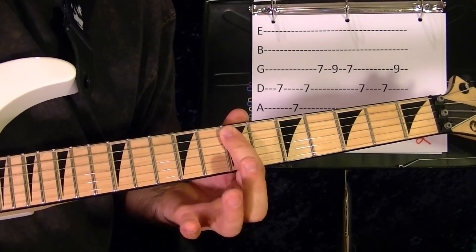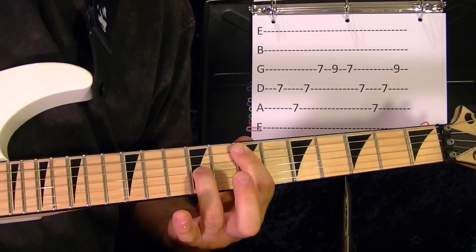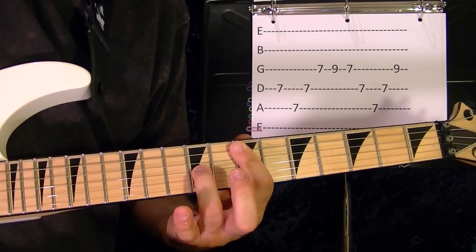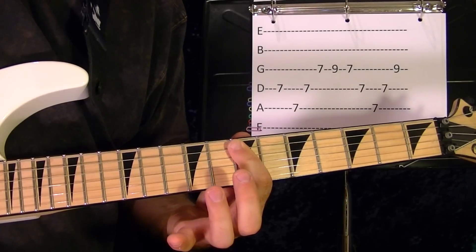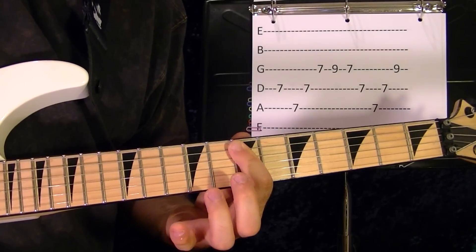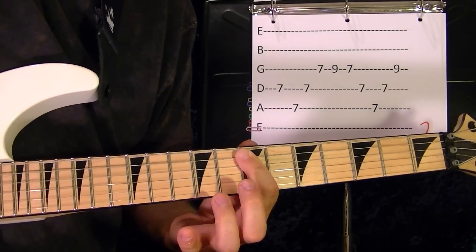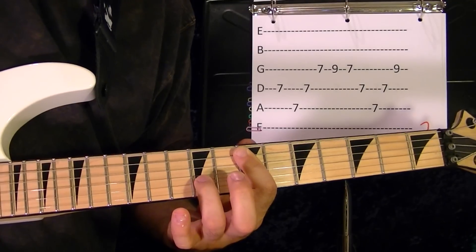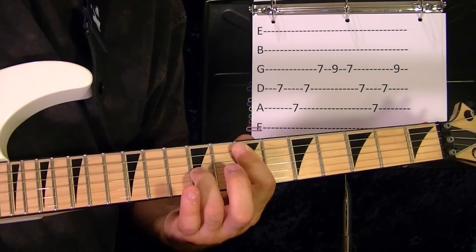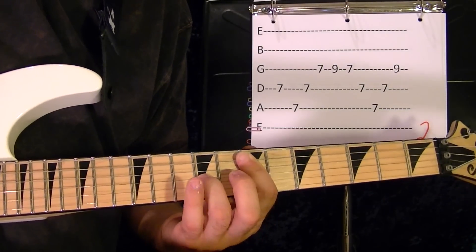Fourth string seventh, third string seventh, third string ninth, fourth string seventh, fifth string seventh, fourth string seventh fifth string seventh. That's riff number two. I'll play it.